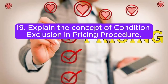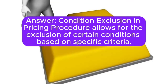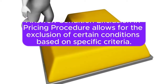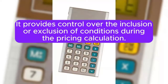Question 19: Explain the concept of condition exclusion in pricing procedure. Answer: Condition exclusion in pricing procedure allows for the exclusion of certain conditions based on specific criteria. It provides control over the inclusion or exclusion of conditions during the pricing calculation.